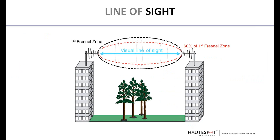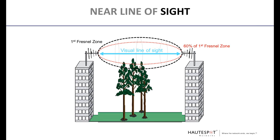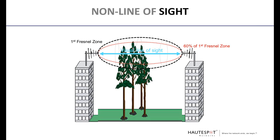To recap: complete line of sight means we have visual line of sight and our Fresnel zone is clear. Near line of sight means our visual line of sight is clear, however we have obstructions encroaching on the Fresnel zone. And non-line of sight means both our visual line of sight and our Fresnel zone are obstructed.